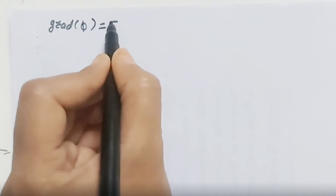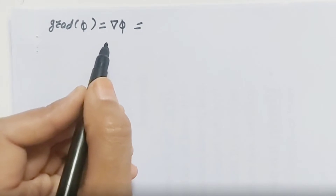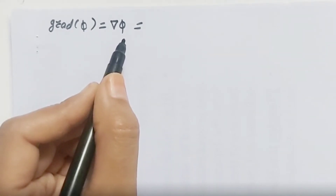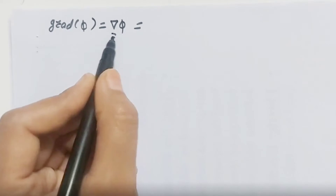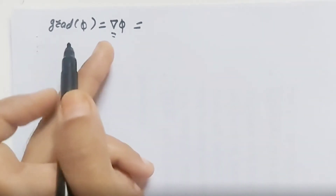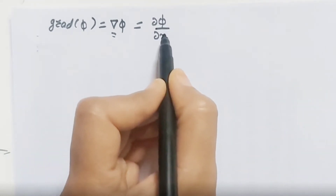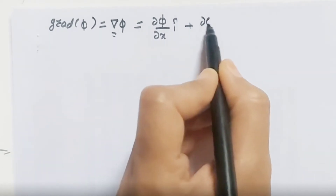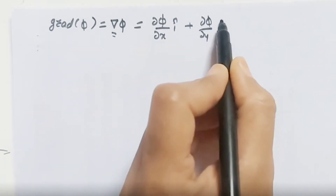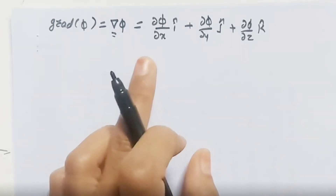Gradient of phi, also written as grad of phi or delta phi, means we are taking the derivative of scalar point function phi with respect to x, y, z. Here delta is a vector differential operator, so we get del phi by del x i-cap plus del phi by del y j-cap plus del phi by del z k-cap.